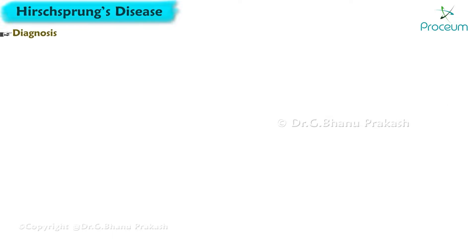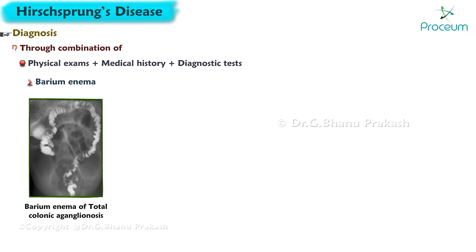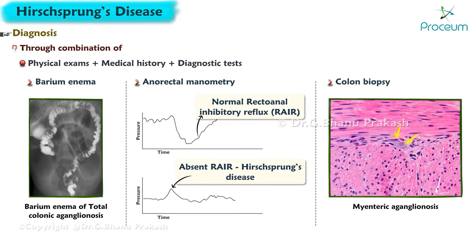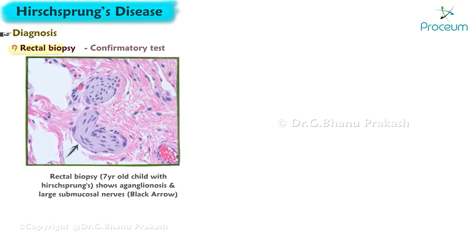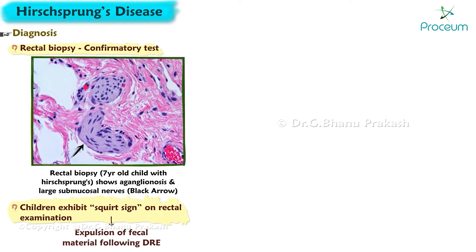Hirschsprung's disease is typically diagnosed through a combination of physical exams, medical history, and diagnostic tests, including barium enema, anorectal manometry, and biopsy of the colon. Rectal biopsy is the confirmatory test. Children may exhibit the squirt sign on rectal examination and expulsion of fecal material following digital examination.